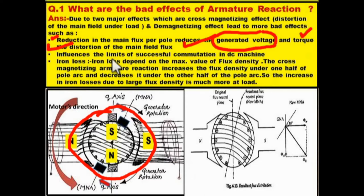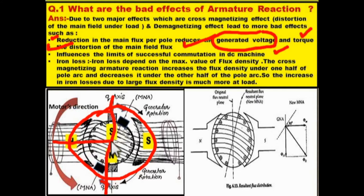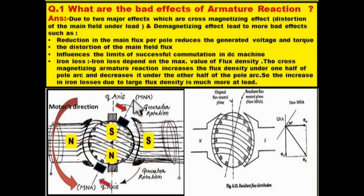The third bad effect is that armature reaction influences the limit of successful commutation in the DC machine. Due to the flux shift, the interpolar axis — or Q-axis — which was previously at 90 degrees to the field flux, has now shifted. This means commutation becomes poorer because the interpolar axis is no longer aligned with the original geometrical neutral axis.